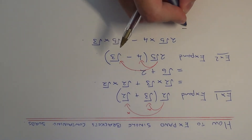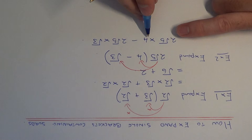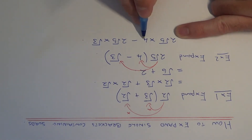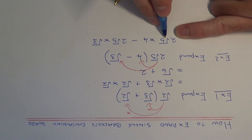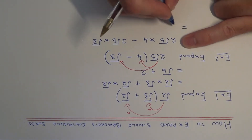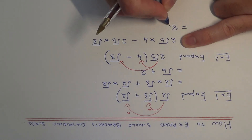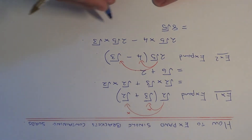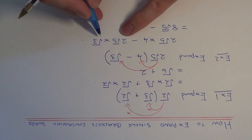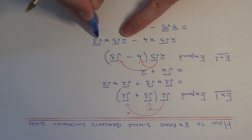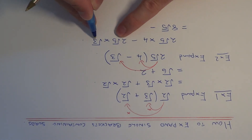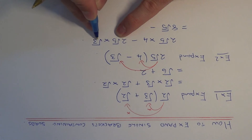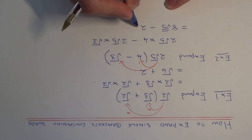So we just need to simplify this now. So 2√5 times 4 — we just need to multiply the two whole numbers together and leave the surd alone. So 2 times 4 is 8, and we just put the √5 on at the end. And for our second term, we've got 2√5 times √3. We can multiply the two surds together: √5 times √3 is √15. So we end up with 2√15.